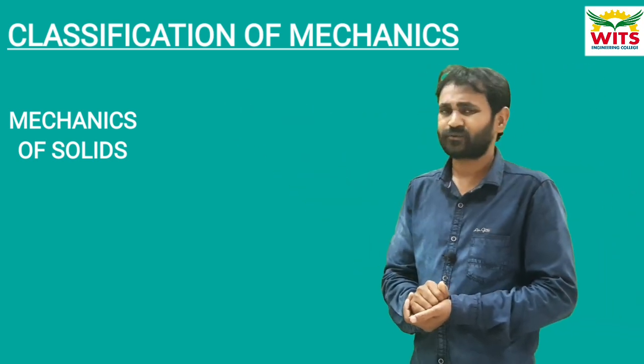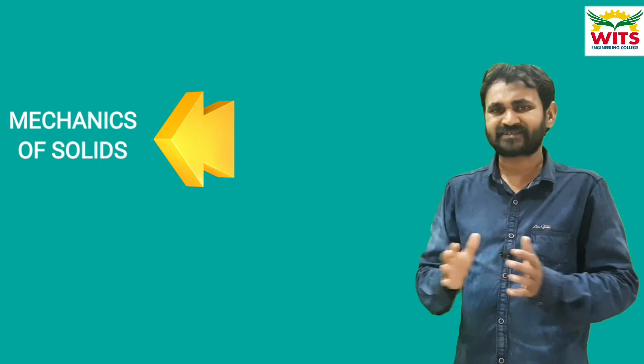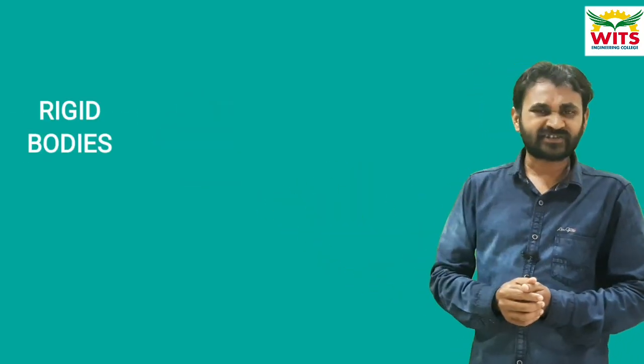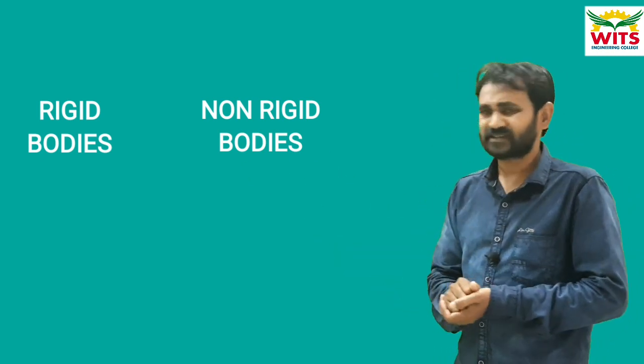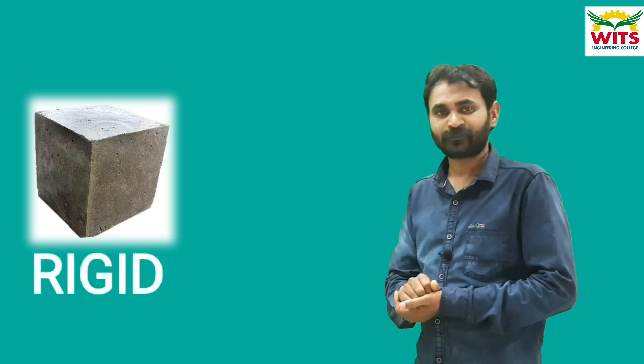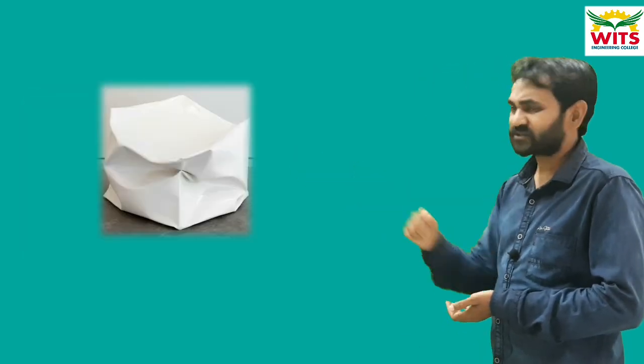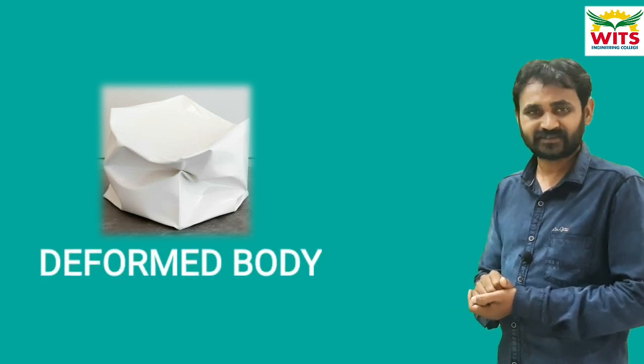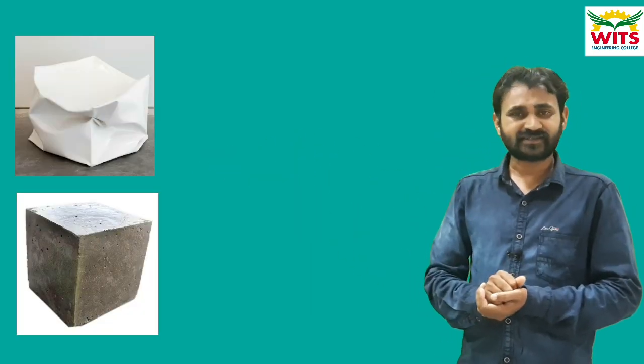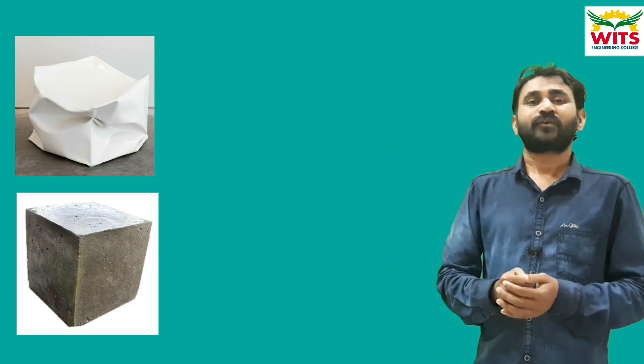Mechanics of solids deals with solid bodies — those are termed as rigid bodies and non-rigid bodies. Under the application of any load, a rigid body should not change its shape. For example, if you take a concrete block and apply some force on it, there is no change, so it is a rigid body. On the other hand, if you apply force on a plastic box, it gets deformed — these are called deformed bodies.